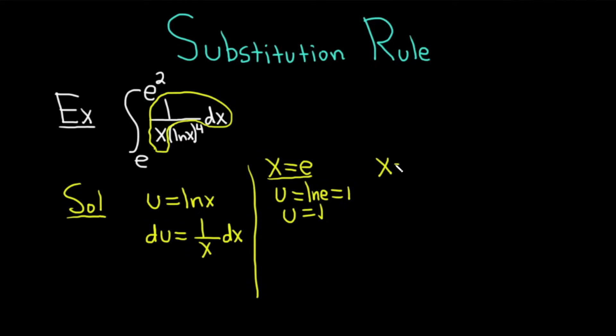When x is e squared, then u is equal to the natural log of e squared, which is just 2. That's because there's a formula that says if you have the natural log of e to the x, it's equal to x. So whenever you see ln of e to anything, it's just that anything. So u is equal to 2. Okay, so let's go ahead and make our substitution.